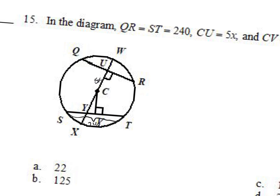What is ST? It is a chord. Why is it a chord? Because it's not a diameter — it doesn't go through the middle, and it stops on two ends of the circle.